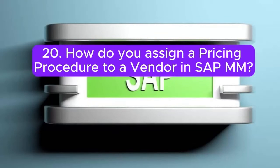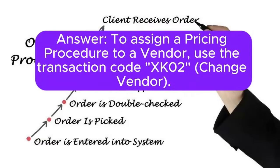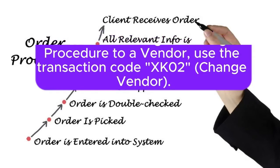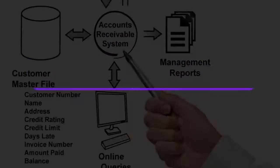Question 20: How do you assign a pricing procedure to a vendor in SAP MM? Answer: To assign a pricing procedure to a vendor, use the transaction code XK02 (Change Vendor). In the vendor master record, go to the purchasing data view and enter the relevant pricing procedure in the field provided.